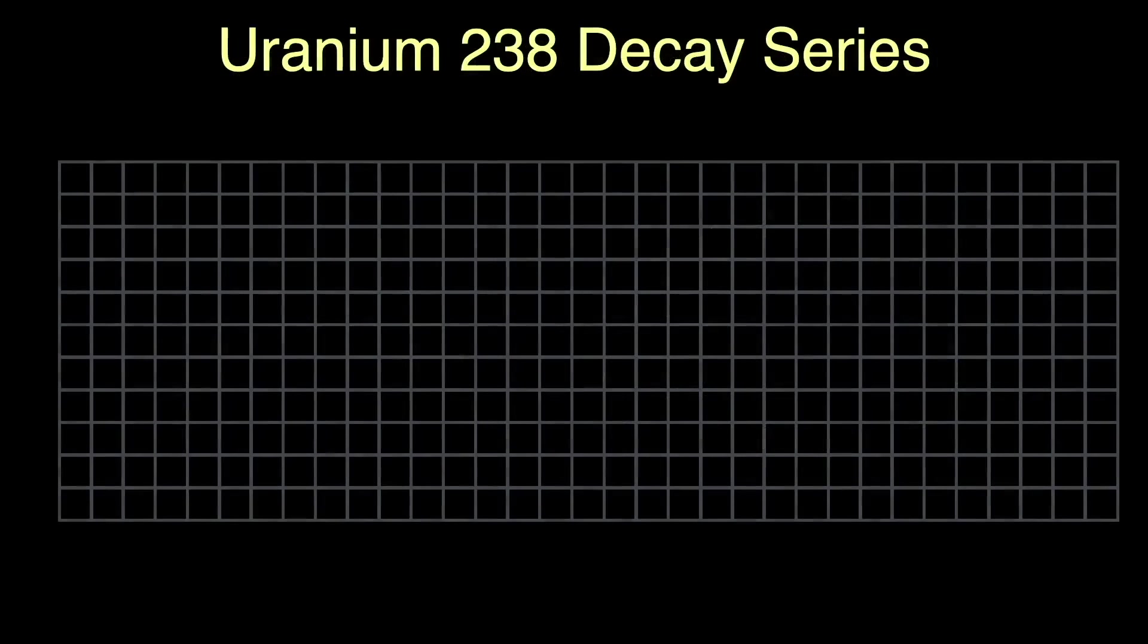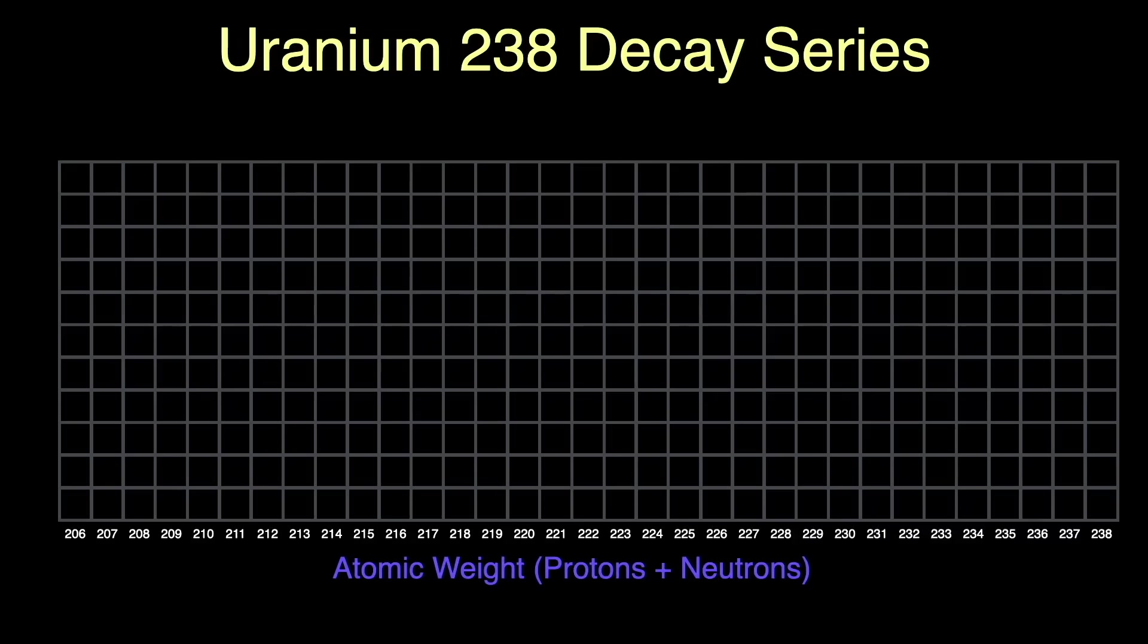I want to show you the decay series that leads from uranium to polonium and ultimately lead. And I want to do it on a chart you'll see in many physics texts. We're only using a very small portion of a much larger chart. On this chart, the horizontal axis shows how many protons plus neutrons are in the nucleus. This is related to the atomic weight of the isotope. The vertical axis is the number of protons in the nucleus. It's atomic number. Since the atomic number also tells us what element we're dealing with, each row is one unique element. Generally speaking, when an isotope decays, it can do this by emitting an alpha particle or a beta particle. And I'm oversimplifying this.